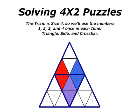Solving our 4x2 Trism puzzle. The Trism is size 4, so we'll use the numbers 1, 2, 3, and 4 once in each inner triangle, side, and crossbar.